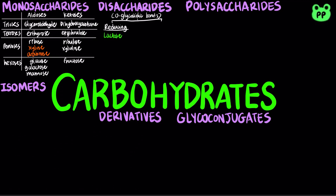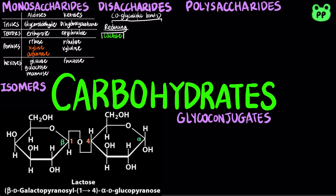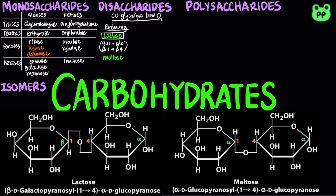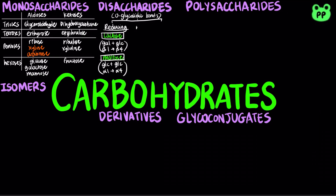Reducing disaccharides include lactose, which consists of galactose and glucose linked by a beta-1,4 glycosidic linkage, and maltose, which consists of two glucose units linked by an alpha-1,4 glycosidic bond. On the other hand, non-reducing sugars don't have a free anomeric carbon, therefore they can't be oxidized.